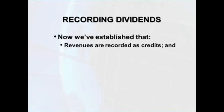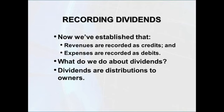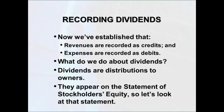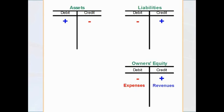We've established that revenues are recorded as credits and expenses are recorded as debits. The next question is: what do we do about dividends? Dividends are distributions to owners and appear on the statement of stockholders' equity. Looking at the statement of retained earnings, we see that dividends are subtracted out to arrive at the ending balance of retained earnings, so dividends reduce retained earnings. Retained earnings are a component of owner's equity, so dividends ultimately reduce owner's equity. Anything that reduces owner's equity is recorded as a debit, so dividends will be recorded as debits.